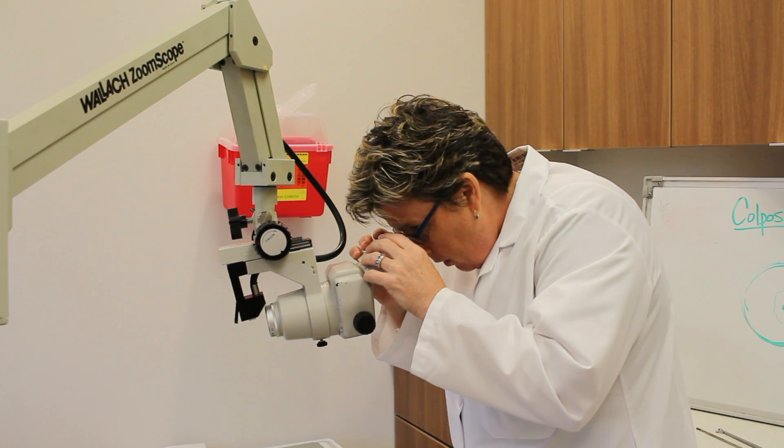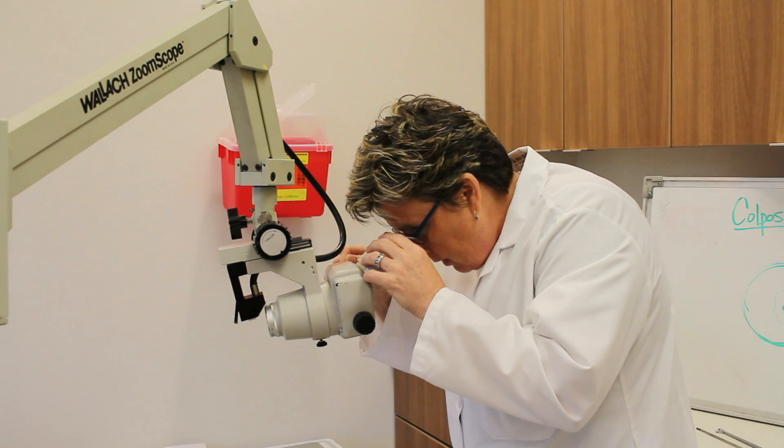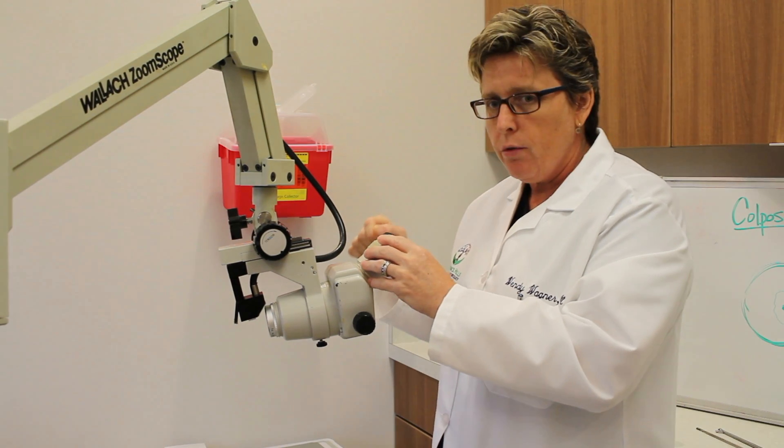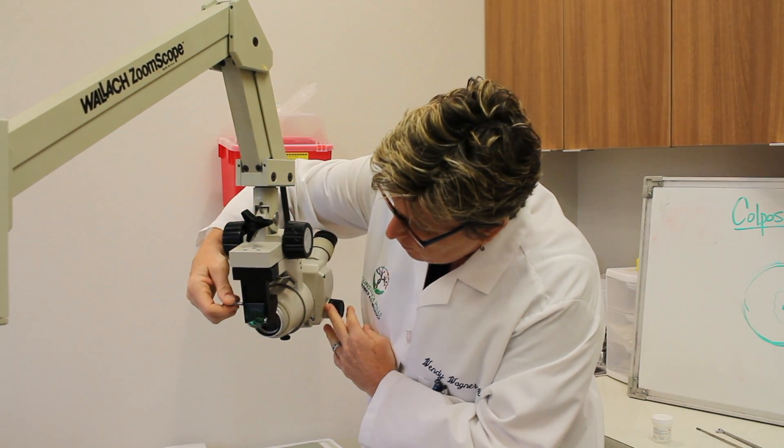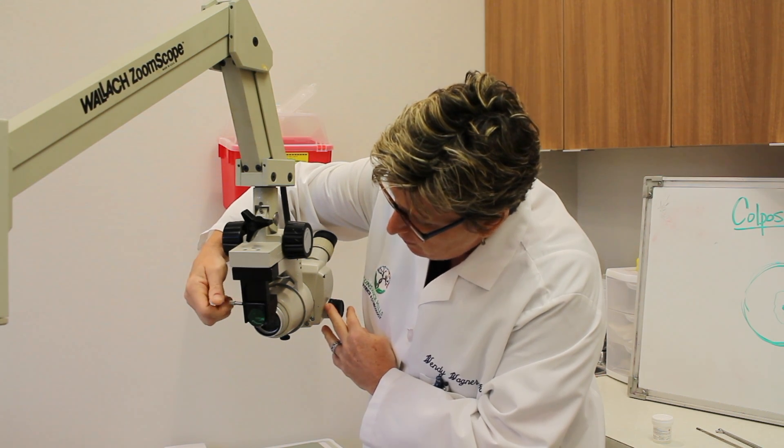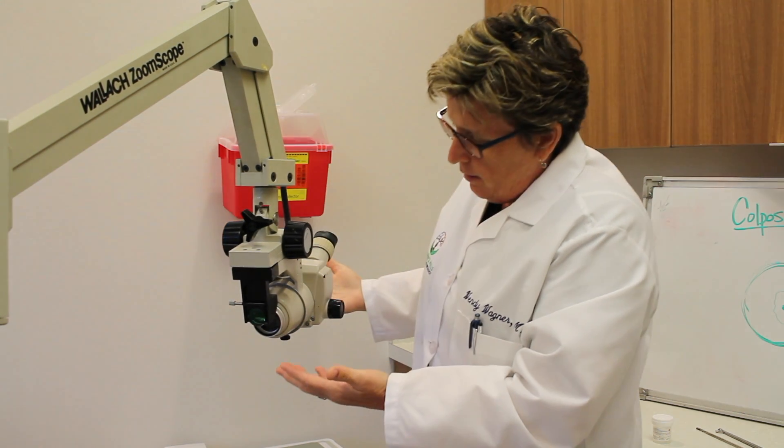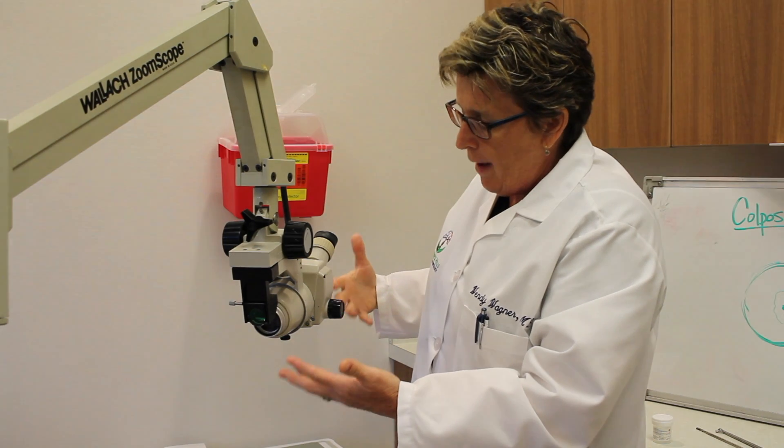The doctor will look through here, put the acetic acid on, and just take a look at the entire surface of the cervix. Sometimes we use what we call the green filter to look for abnormal vessels, but basically nothing scary. It's just a magnification scope.